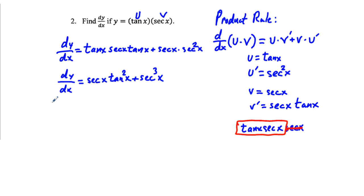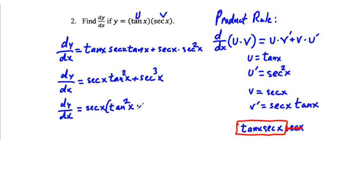We have a common factor of secant x between these two terms, so dy/dx equals secant x times the quantity tangent squared x plus secant squared x. When you have squared trig functions like this, you may be able to simplify using Pythagorean trigonometric identities.